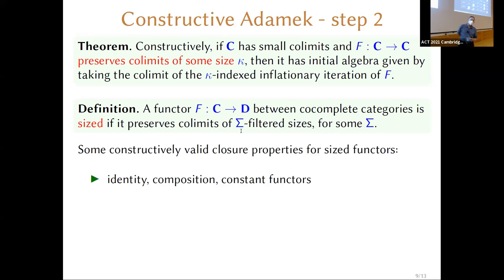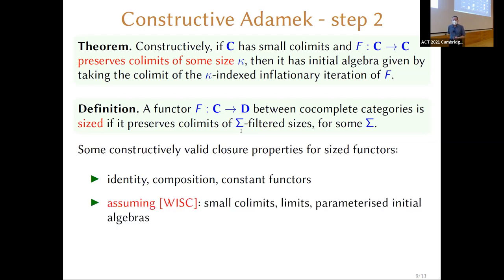Some things are easy: the identity functor is sized, you can compose sized functors and they will again be sized, and the constant functor is sized because we made sizes be directed. What's not so easy is: if you had a small diagram of sized functors and took its co-limit or limit, or took initial algebras with respect to one variable while leaving others fixed to get a parameterized initial algebra, would the resulting functors again be sized?